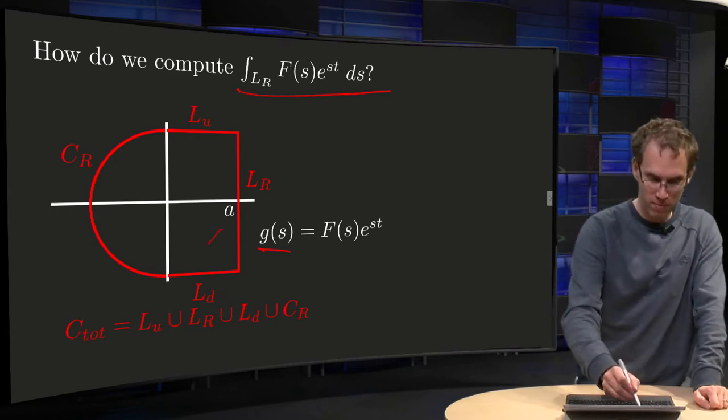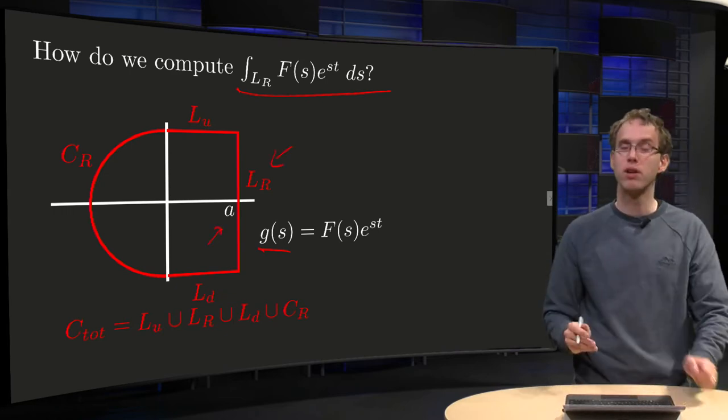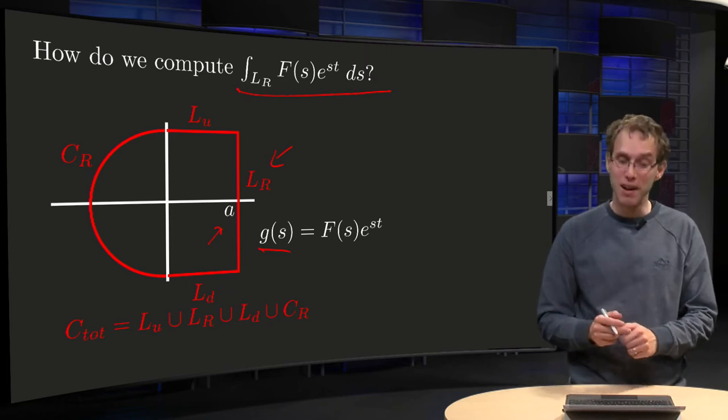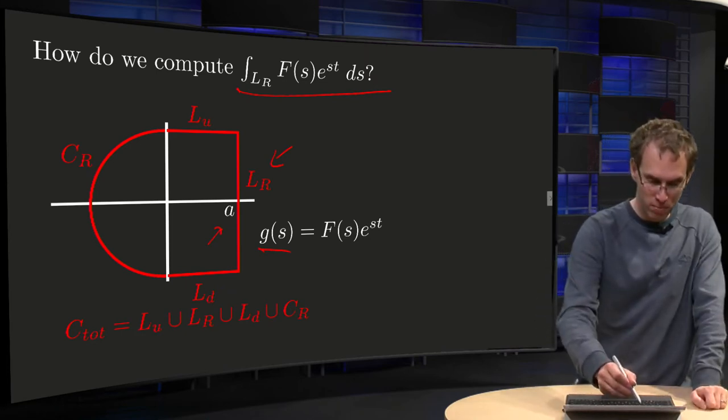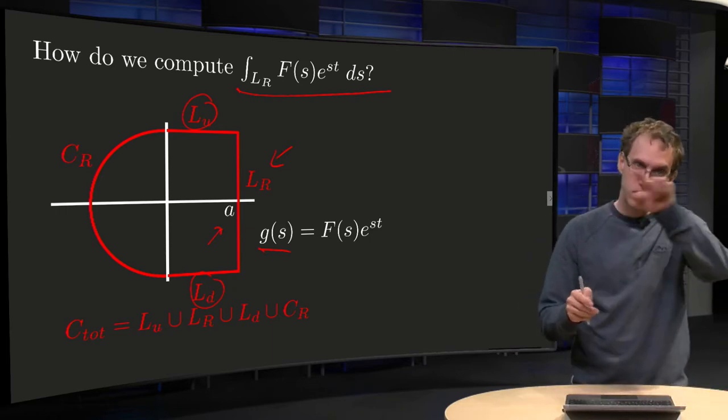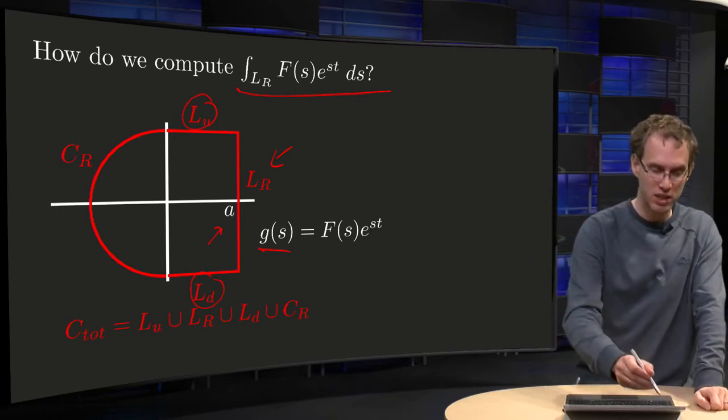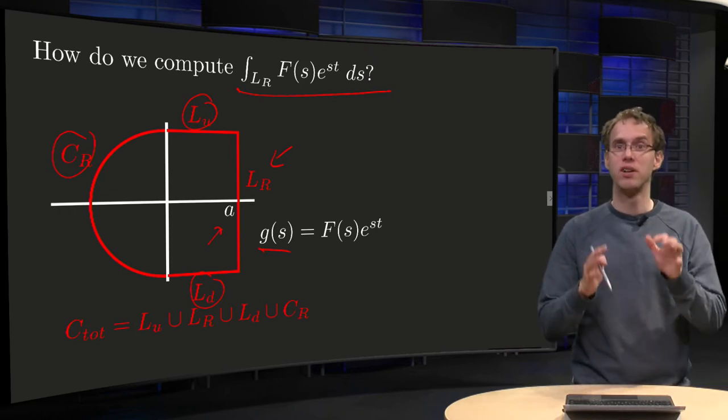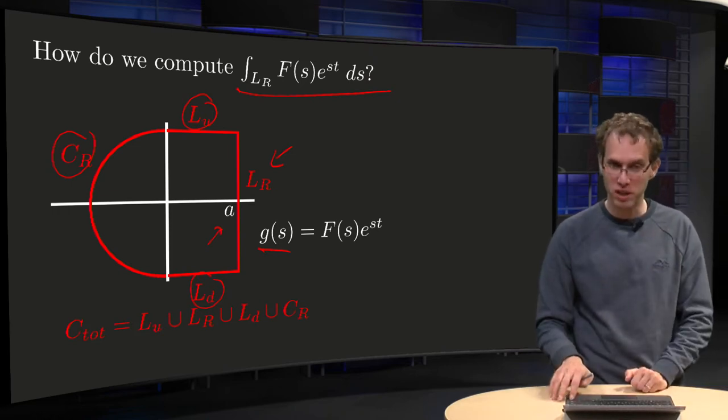We have some positive a, we have our L_R, so how do we close it? We go to the left in the complex plane, we put L_up and L_down until the imaginary axis, and then we make a semicircle C_R. That's how we will often do this.